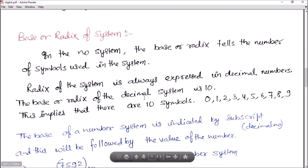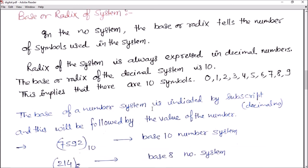The base or radix of the decimal number system is 10. That implies there are 10 symbols, 0 to 9, therefore its base or radix is 10. The base of number system is indicated by subscript decimal number and will be followed by the value of the number.